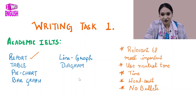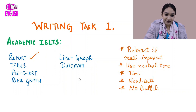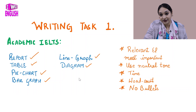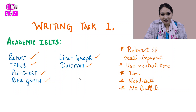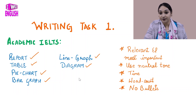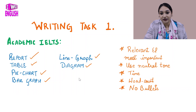After the report, there are very common visual representations: tables, pie charts, bar graphs, line graphs, and diagrams. A diagram could be the blueprint of a building or an electronic circuit. In both cases, you will be provided enough information and cues in the question. Remember, Writing Task 1 has predictable answers and we judge that predictability from the question itself.